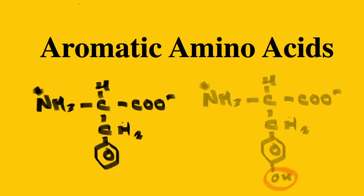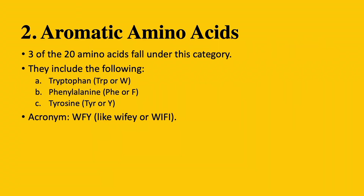Hi everyone, welcome back. Today's video will be about aromatic amino acids. Three of the 20 amino acids fall under this group. They include tryptophan, phenylalanine, and tyrosine.